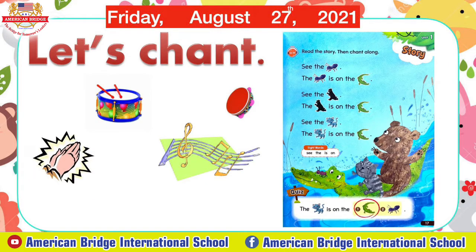Track 13 — read the story. See the ant, the ant is on the alligator. See the bear, the bear is on the alligator. See the cat, the cat is on the alligator. Track 14 — now chant along: see the ant, the ant is on the alligator; see the bear, the bear is on the alligator.